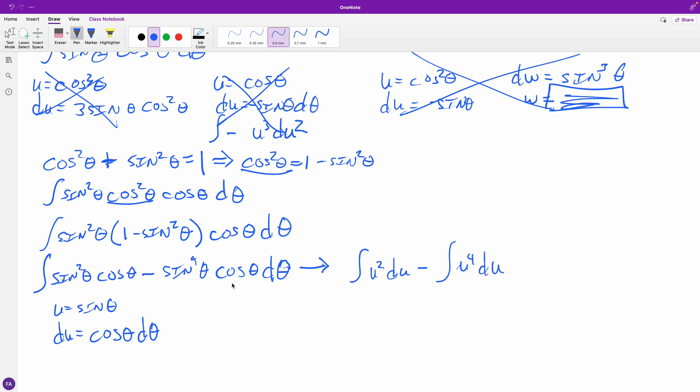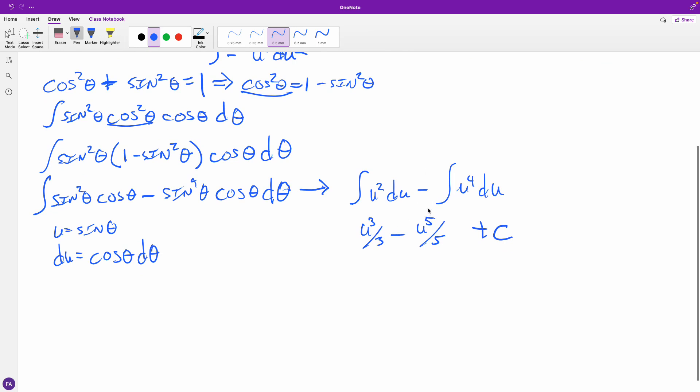Now you need to pause and back up if you need to, but there's u right there to the fourth power, and here is du, which is cosine d theta. So now I can do these integrations very easily. u to the third over three minus u to the fifth over five plus c. And now that I have that actually integrated, now I can go back and I can plug in u. So that becomes sine cubed theta over three minus sine to the fifth theta over five plus c. All right, and there is that integration.